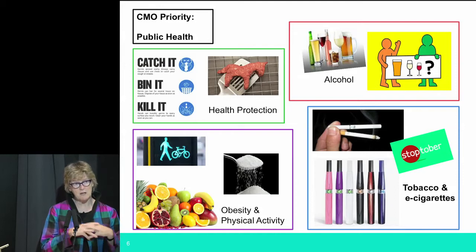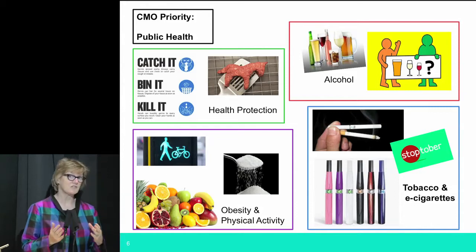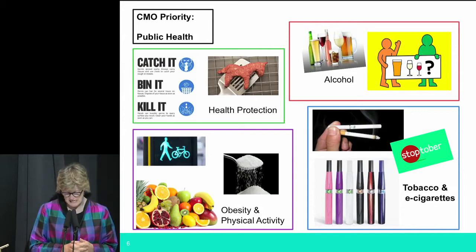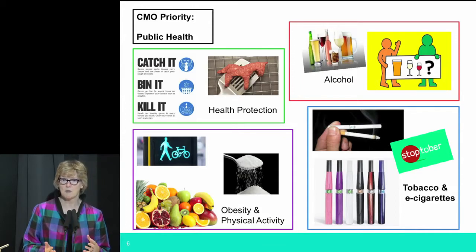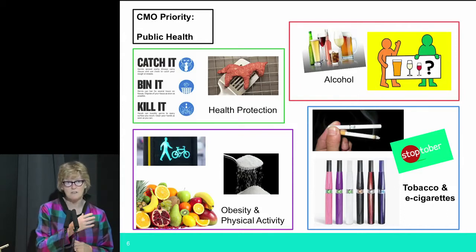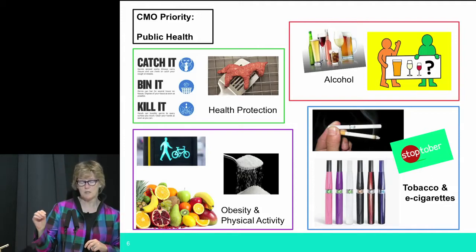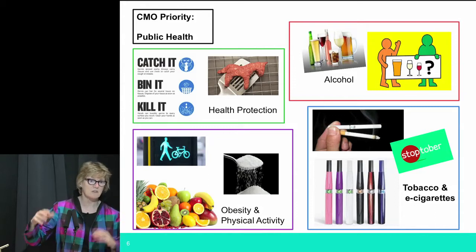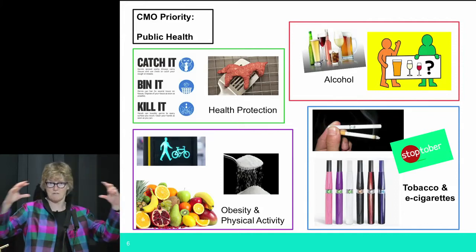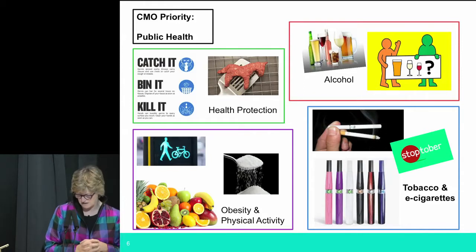I have public health priorities but also issues arising from the annual reports, including antimicrobial resistance. I also have to respond to sudden issues — the obvious one being horse meat. Many of you will remember that I had to explain that even if you'd eaten horse meat it wasn't going to harm you. If it was contaminated with phenylbutazone, you'd need to eat five or six hundred large horse burgers to get a single human dose.